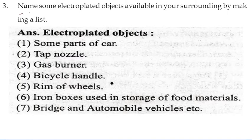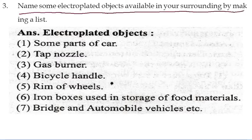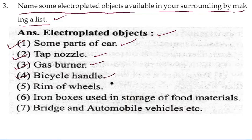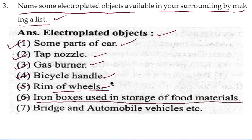Name the electroplated objects available in your surroundings by making a list. The list includes: some parts of a car, tape nozzle, gas burner, bicycle handle, rim of the vehicle, iron boxes used in storage of food material (where zinc polish is applied), and bridges and automobile vehicles. You can add more to this list.